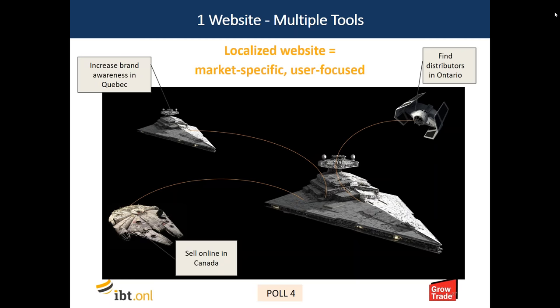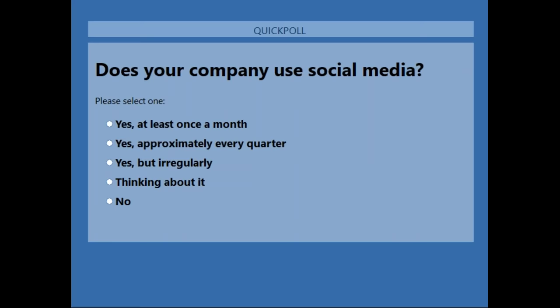Is there time for a quick poll? There is, Susanna. Poll number four: Does your company use social media? Are you posting at least once a month, approximately every quarter, irregularly, thinking about it, or no? Here's the feedback: 40% say yes, at least once a month; 38% say yes, but irregularly; 19% are thinking about it; and 6% say no. Very useful and relevant information. That's the fourth and final poll — I hand back to Susanna.